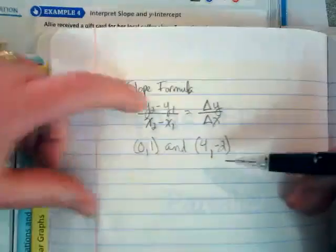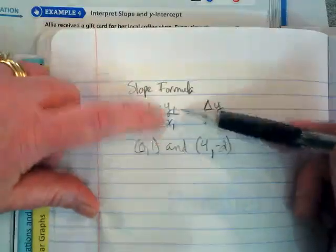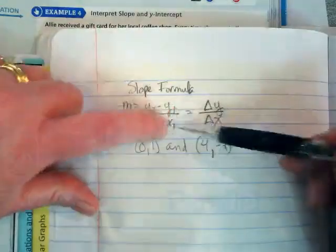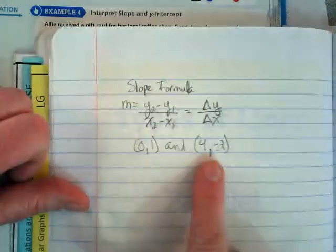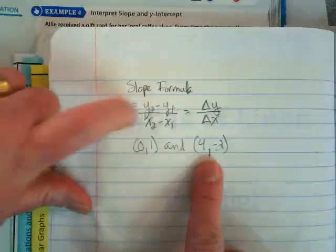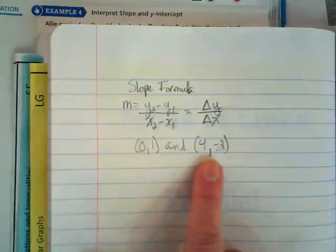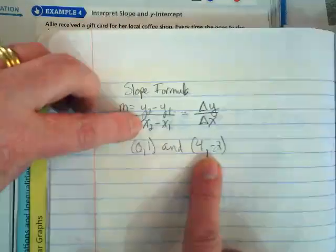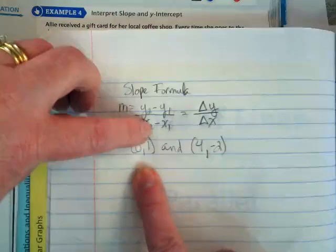This one would go into these places because it's our second set, and these two would go into these places because it's our first set. That's all that these little sub numbers are saying, but the reality is it doesn't matter. If I wrote this one down first, it would have gone here instead. You can just put them in any place in there. You just have to make sure that this pair is above each other and this pair is above each other, and that you're keeping track of the negatives.